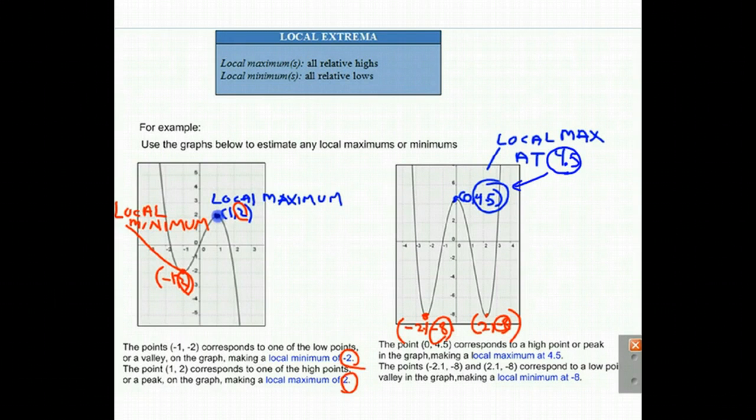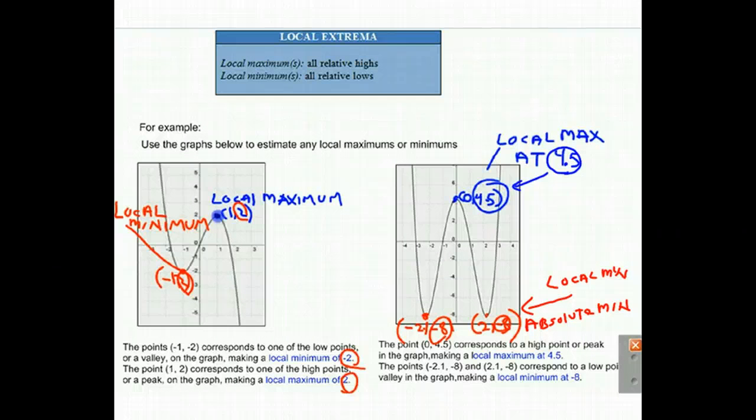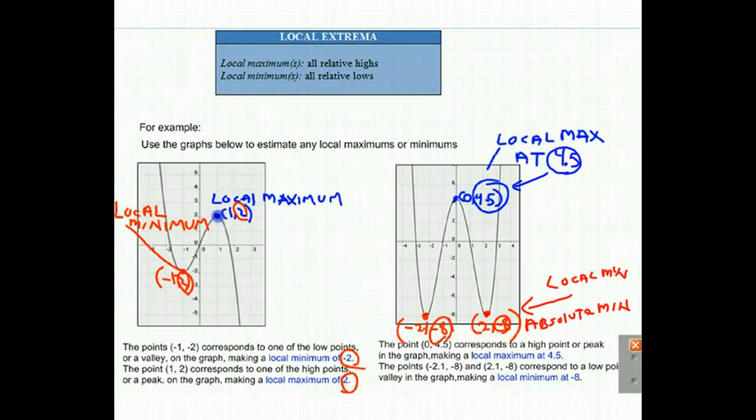And one other thing I would like to mention: you might notice that down here on the right-hand graph, these are local minimums, but they are also absolute minimums as we learned before. That should tell you that you can have an absolute minimum and a local minimum at the same points. And in the same way, you could have an absolute maximum and a local maximum. In our examples here, only these two minimums on the right-hand graph are both local mins and absolute mins.